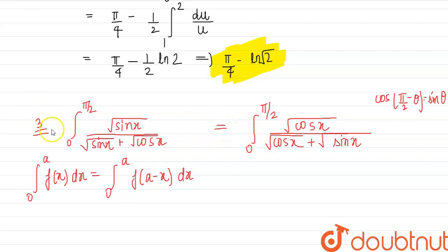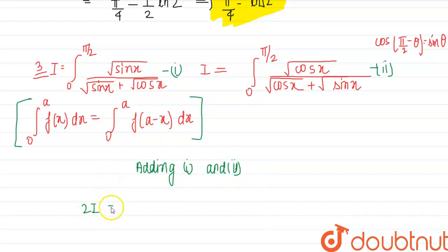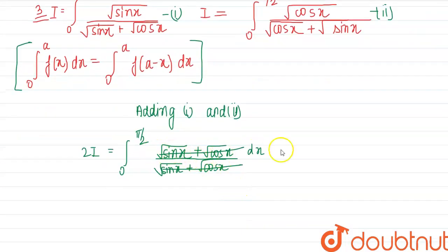Letting the original integral equal I (equation 1) and the transformed integral also equal I (equation 2), we add them: 2I = ∫₀^(π/2) (√sinx + √cosx)/(√sinx + √cosx) dx = ∫₀^(π/2) 1 dx. The numerator and denominator cancel, giving 2I = [x] from 0 to π/2 = π/2, so I = π/4.